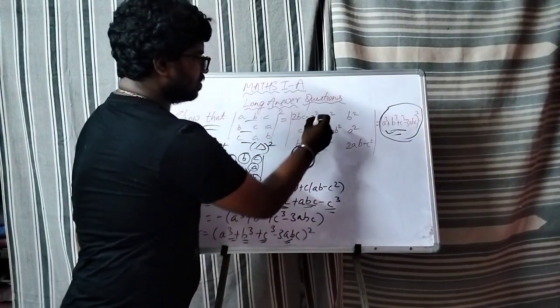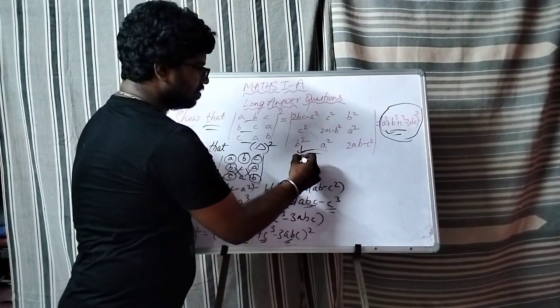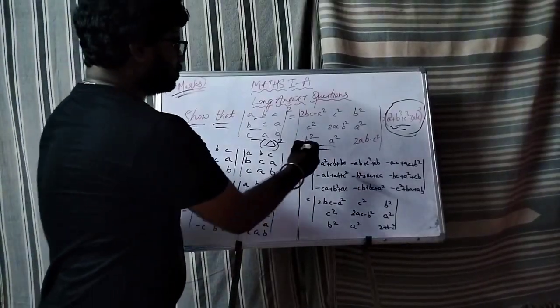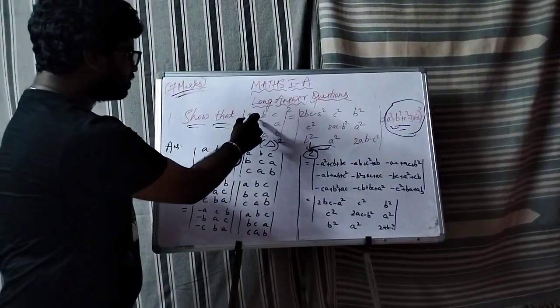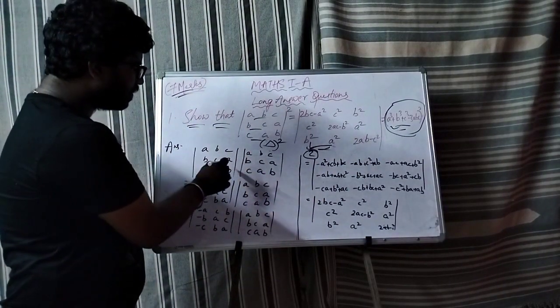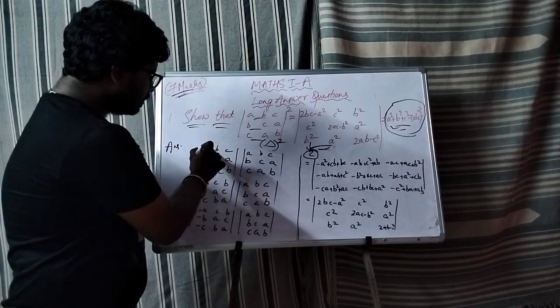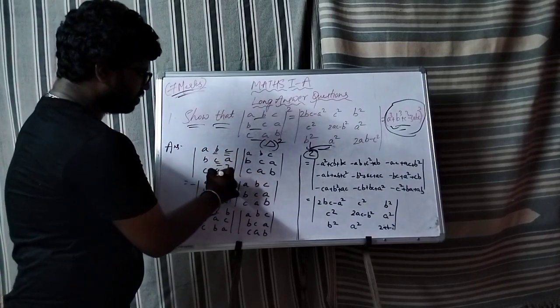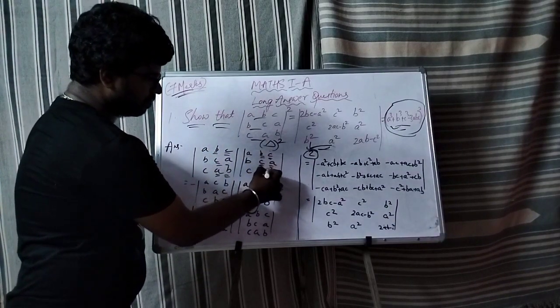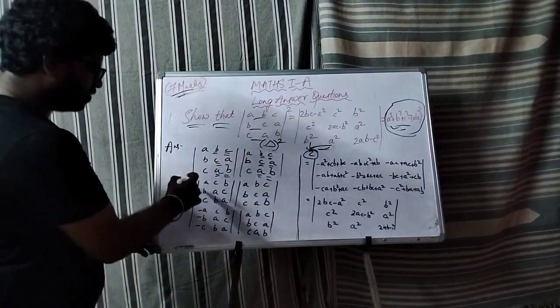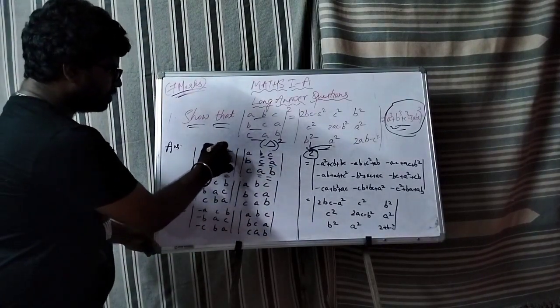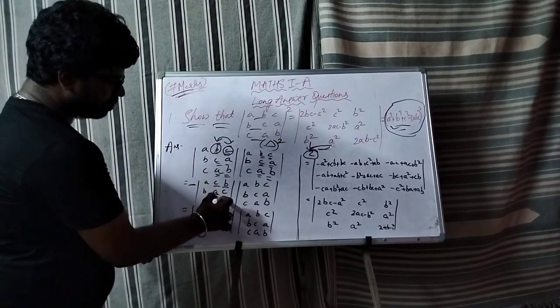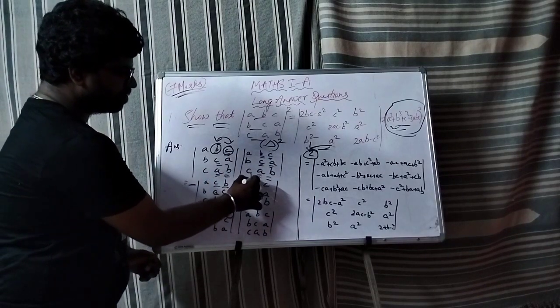So first condition proved. Now the second condition continues with the same condition. Taking delta value 2 times, we get bc, ca, ab which is the same. Taking minus and interchanging b and c.